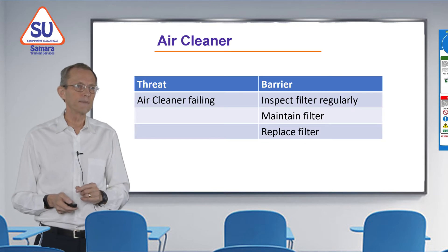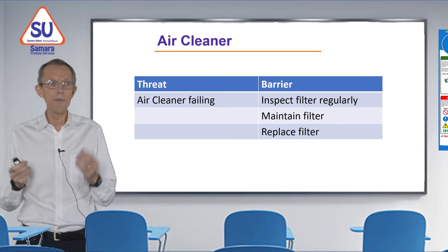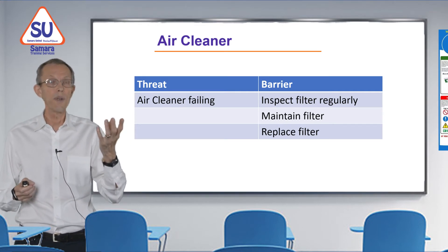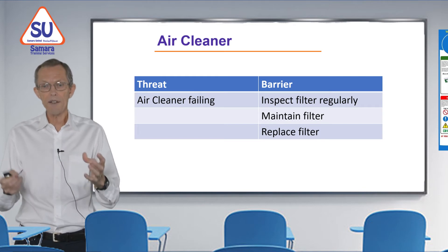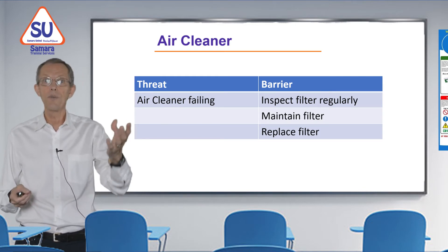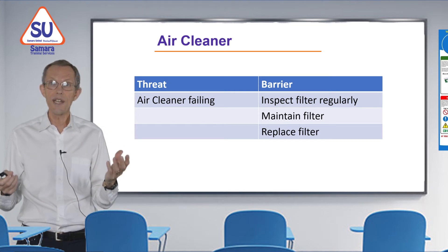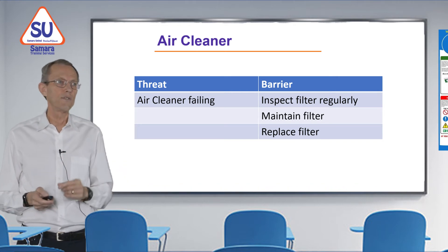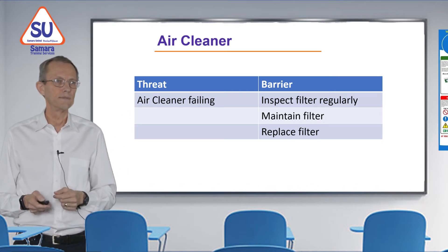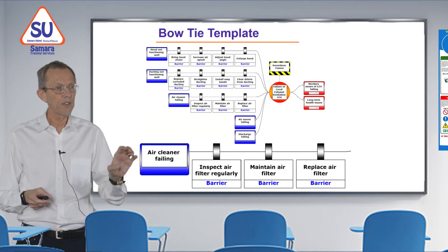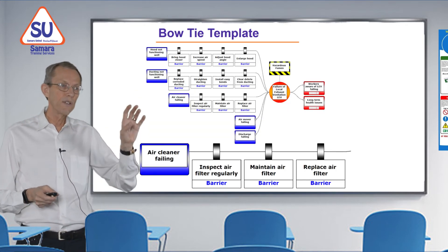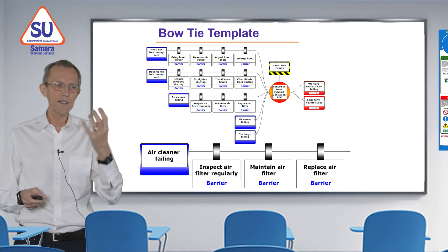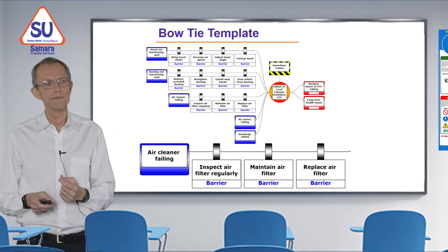The third threat: the air cleaner may fail. We could replace the filter, or we can inspect the filter routinely and regularly so we know it's in good condition. We could also maintain the filter — cleaning or replacing it. On the diagram, the third threat line shows: air cleaner failing, with three barriers — inspect regularly, maintain the filter, and replace the filter.